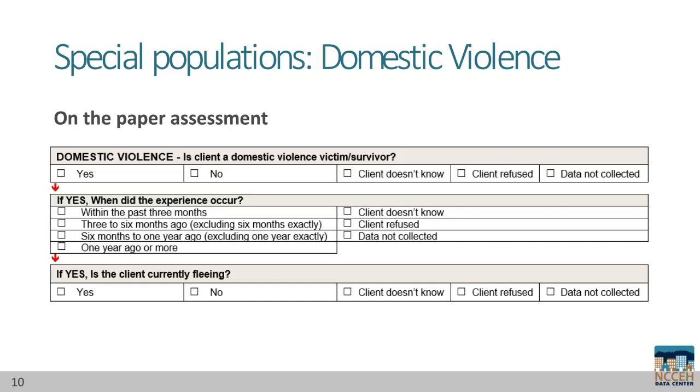This concludes Part 7 of the HMIS Data Standards Training, reviewing income, non-cash benefits, and domestic violence history elements.